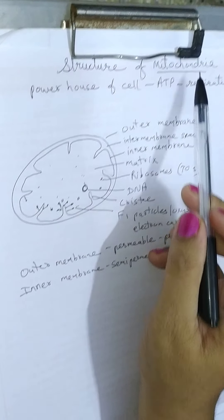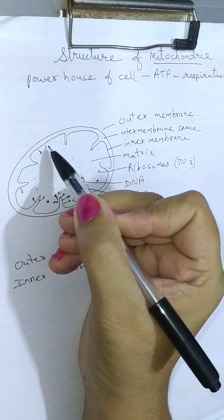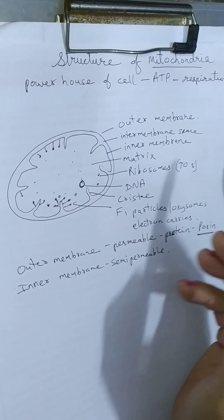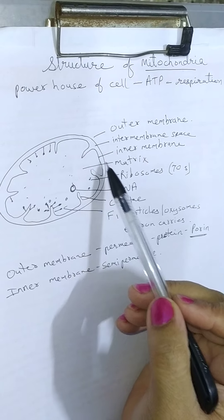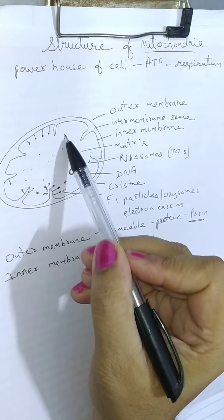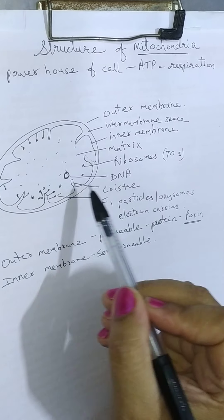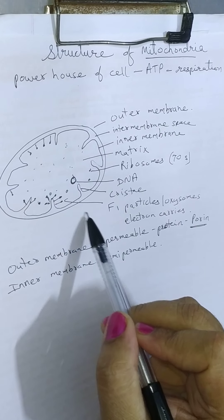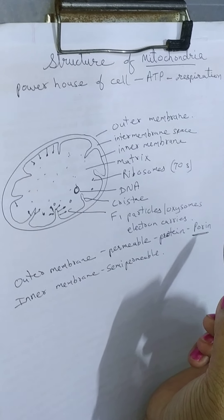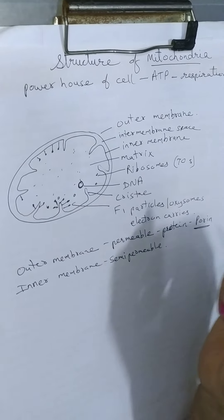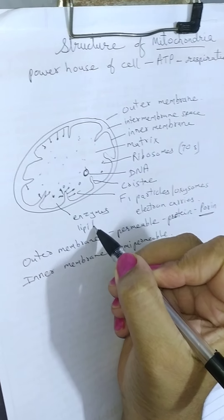To summarize: mitochondria is the powerhouse of the cell as it generates ATP during respiration. It is oval or spherical in shape. The outer membrane is permeable due to the protein porin. The inner membrane is thrown into finger-like projections called cristae. The fluid inside is the matrix, which contains ribosomes of the 70S type, DNA, and RNA. On the cristae, F1 particles are present, which contain electron carriers and also enzymes and lipids.